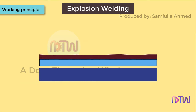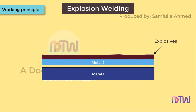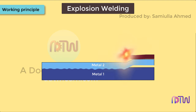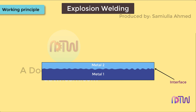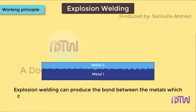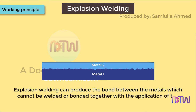Working principle: with the application of controlled detonation of chemical explosives on the welding surface, the explosion causes the weld plate to accelerate with very high velocity against the other metal, thus deforming the plate at the interface. This plastic deformation forms a metallurgical bond at the interface of the metals to be joined. The detonation lasts for a very short period of time and does not damage the metals. Explosion welding can produce bonds between metals which cannot be welded by conventional welding processes.